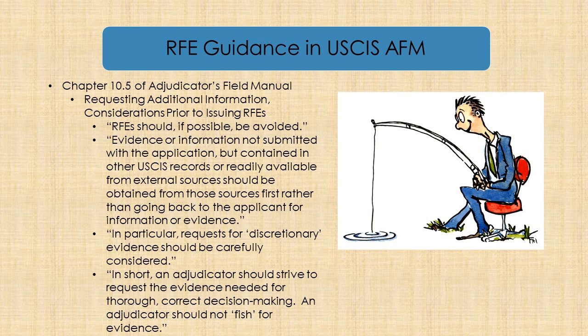The Adjudicator's Field Manual for CIS offers guidance for officers on RFEs in Chapter 10.5. Per the manual, requesting additional evidence or returning a case for additional information may unnecessarily burden USCIS resources, duplicate other adjudication officers' efforts, and delay case completion. In short, the manual discourages the use of RFEs — it says, if possible, it should be avoided. It also encourages officers to be resourceful in obtaining information from other CIS records or external sources, and indicates they should avoid fishing for evidence.